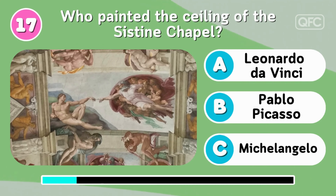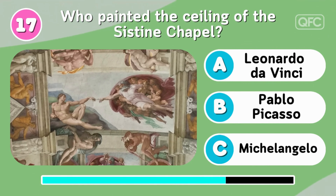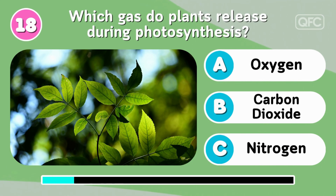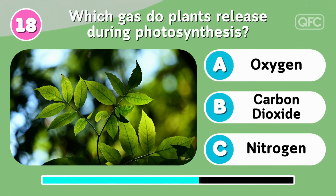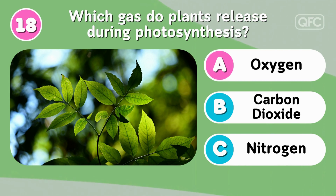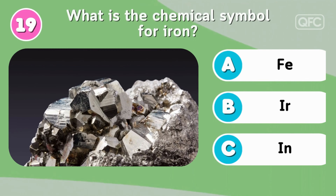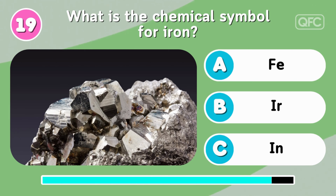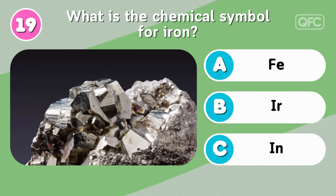Who painted the ceiling of the Sistine Chapel? Which gas do plants release during photosynthesis? Oxygen. What is the chemical symbol for iron? FE.